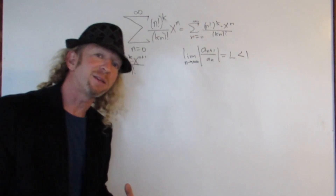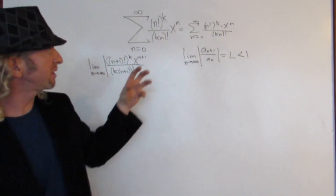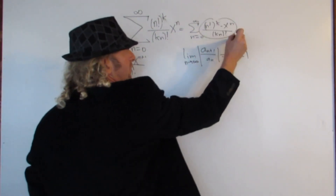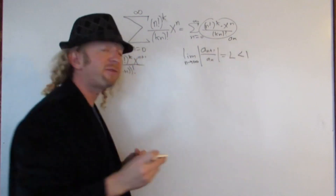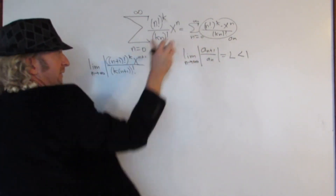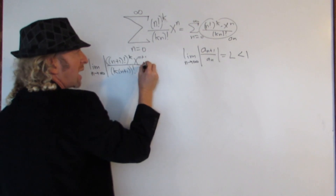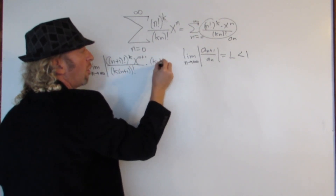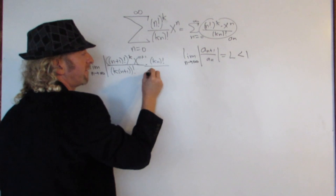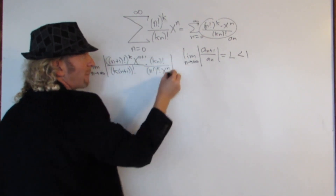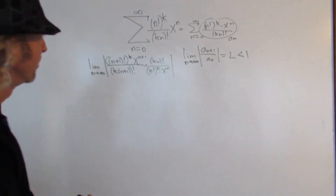Now we have to divide by a sub n — this whole expression here is our a sub n. When you divide by something in mathematics, you multiply by the reciprocal, so we're basically going to flip this. So times kn factorial over n factorial to the k times x to the n, all inside absolute value.